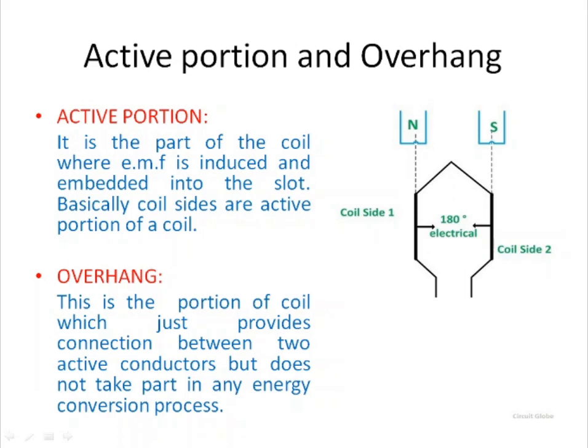Active portion and overhang of a coil. The active portion is a part of the coil where EMF is induced and it is embedded into the slot. Basically, the coil sides are the active portion of a coil. The overhang is the portion of the coil which just provides a connection between two active conductors but does not take part in any energy conversion process.